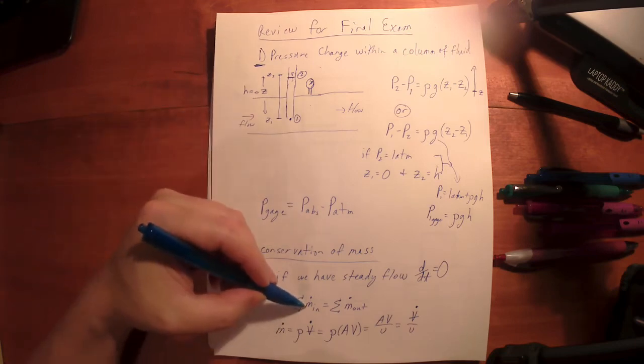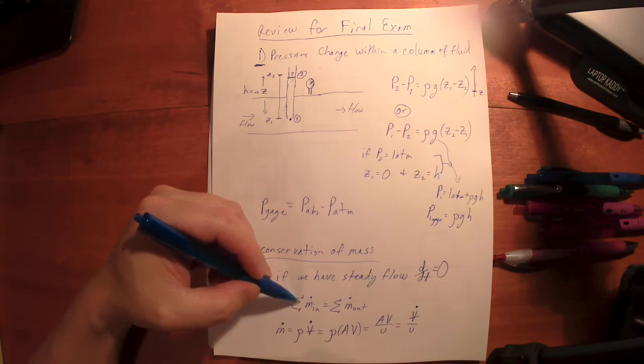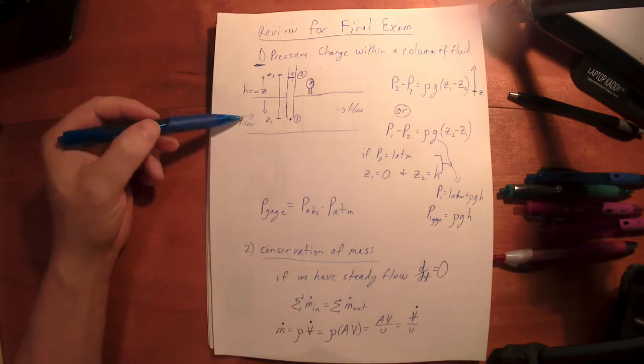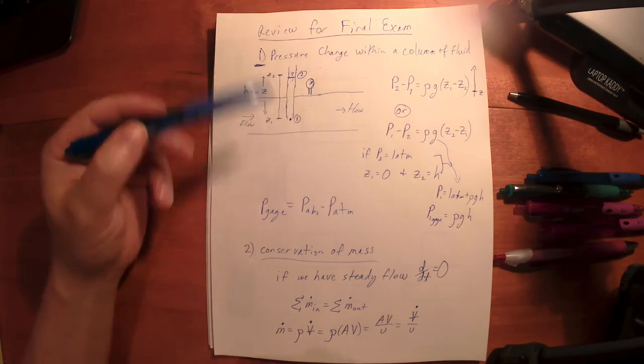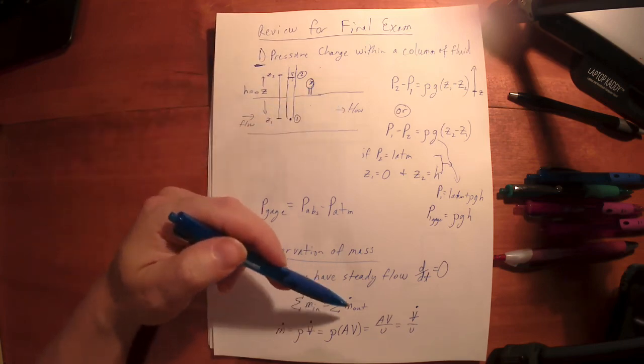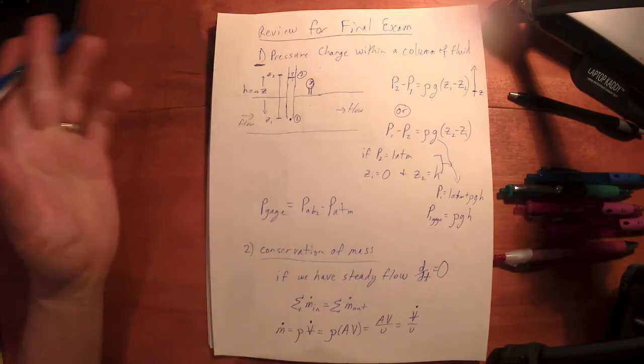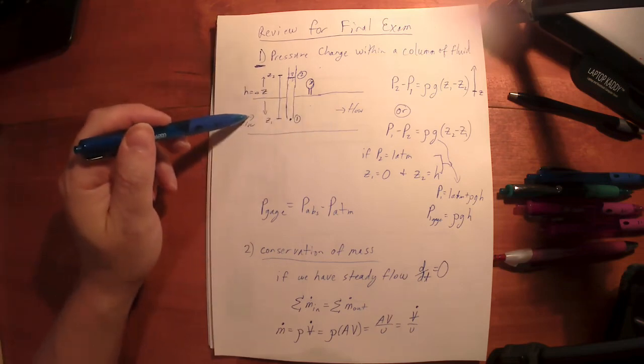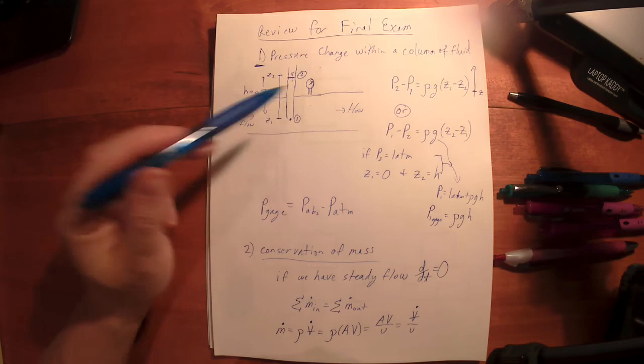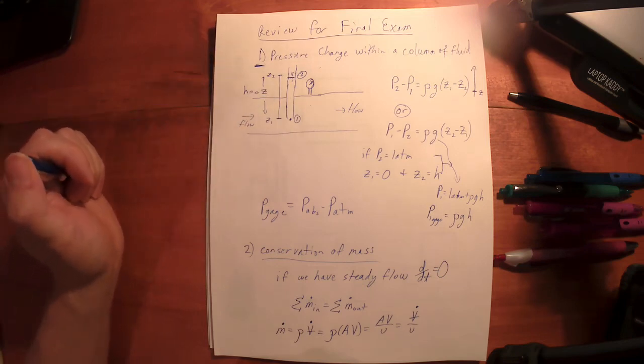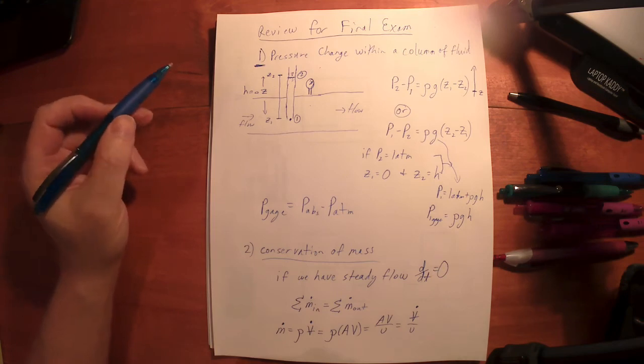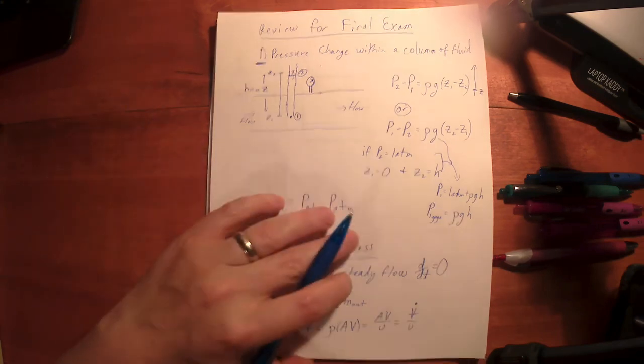So everywhere I've got mass coming into the system, I add all that up, and I can set that equal to all the mass going out. If it's like this up here, and I've got one inlet and one outlet, that's easy. Then it's just M dot 1 is equal to M dot 2. Let's say A and B. So M dot A is equal to M dot B, and there's no reason to distinguish it. It's the same M dot. Same M dot.